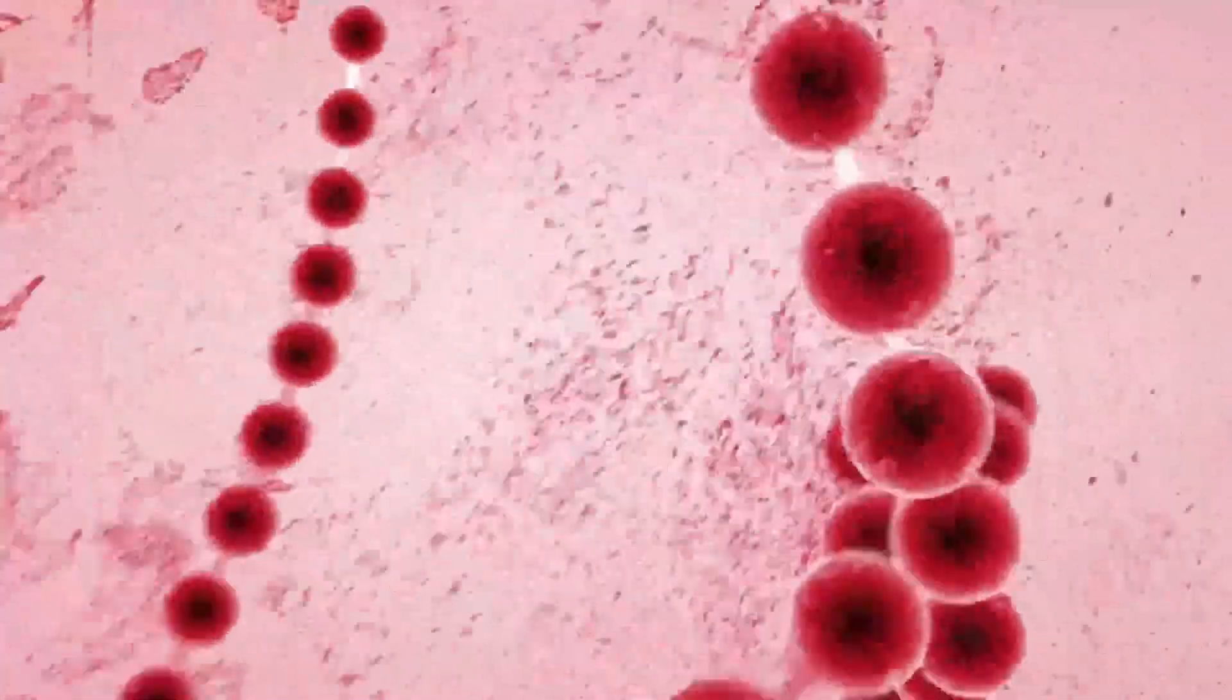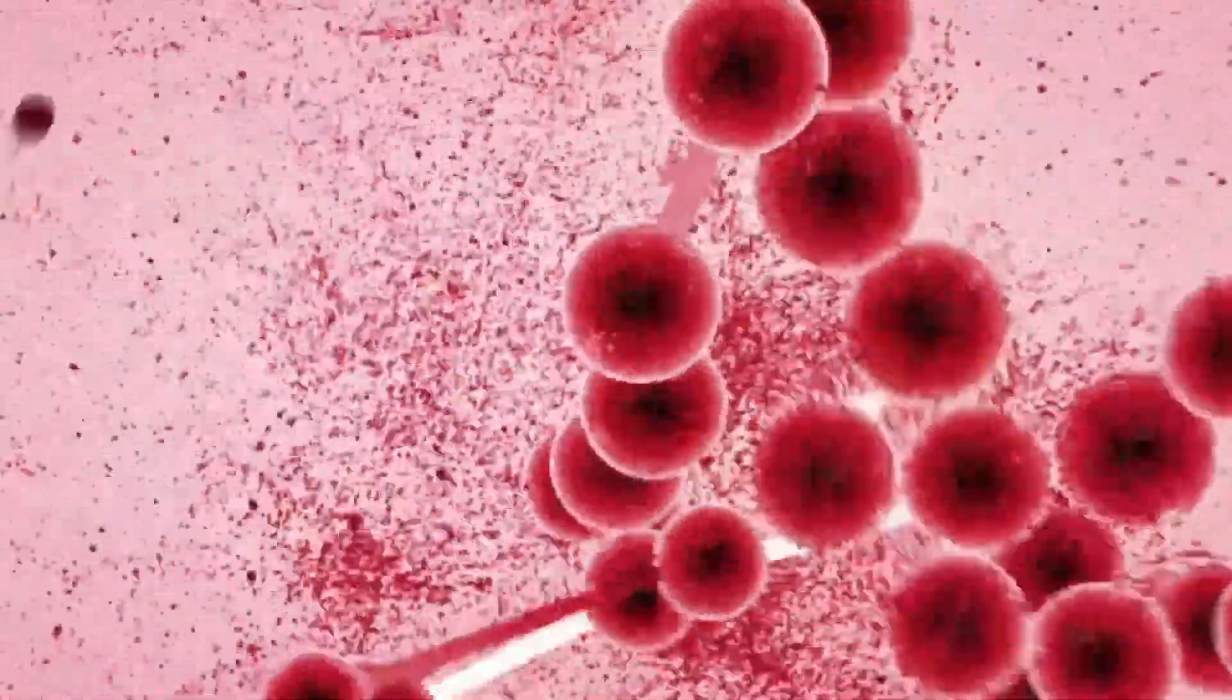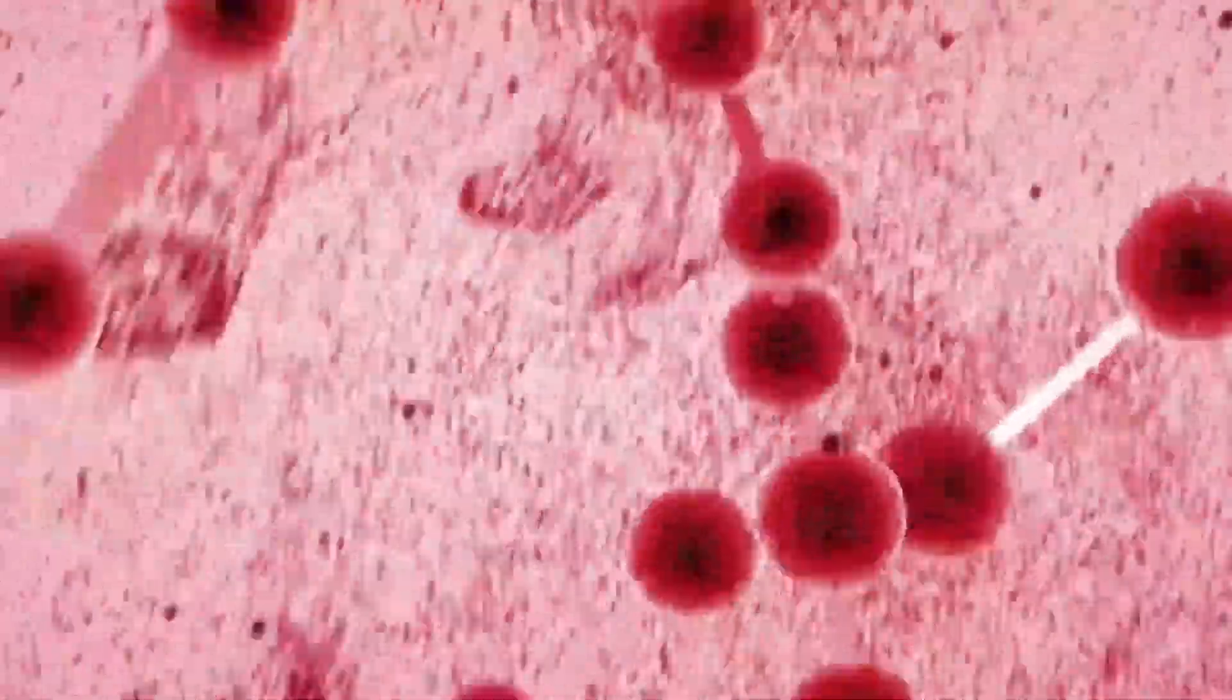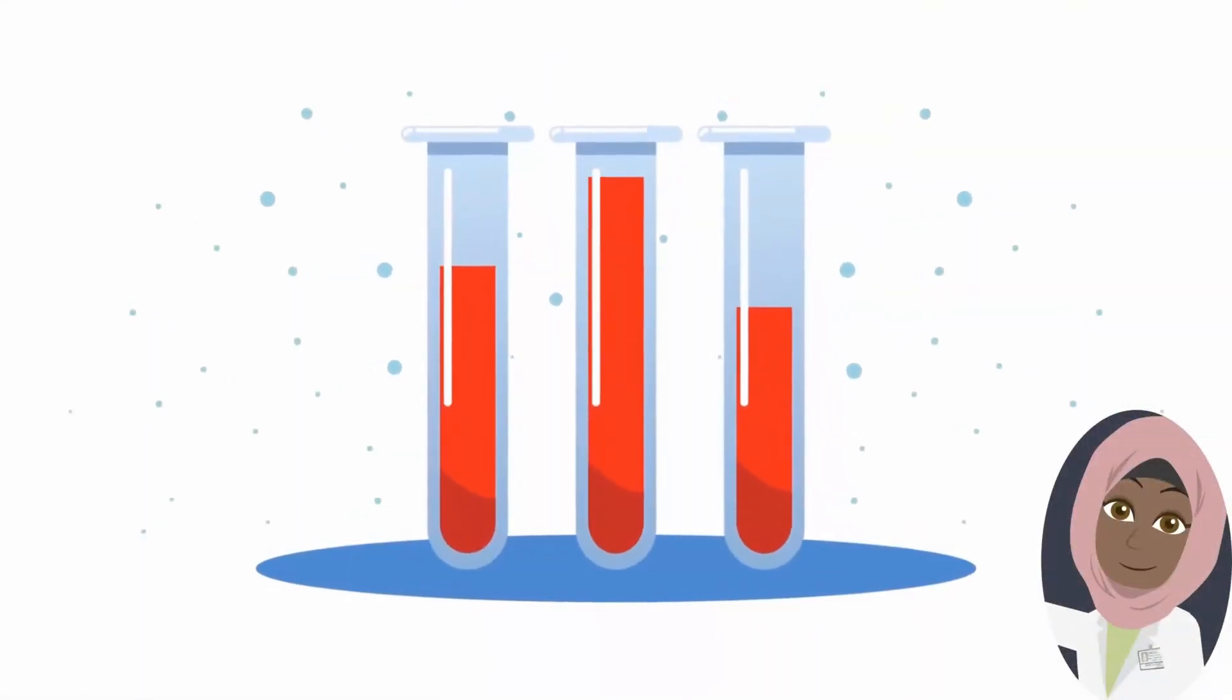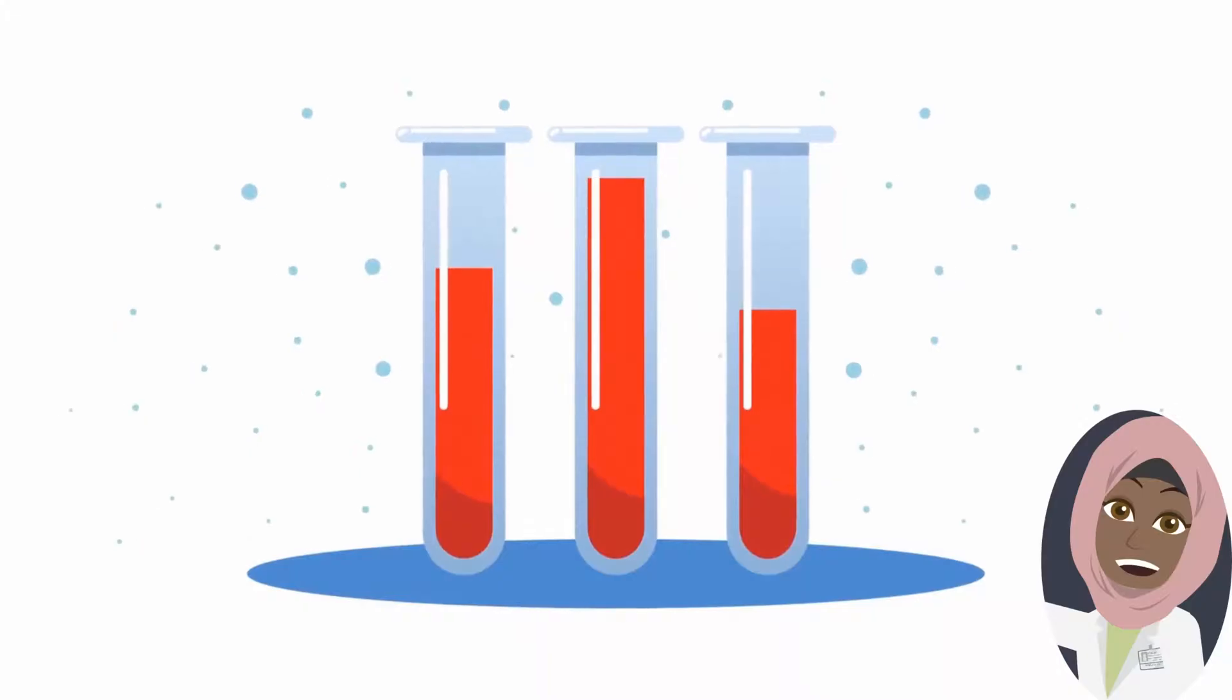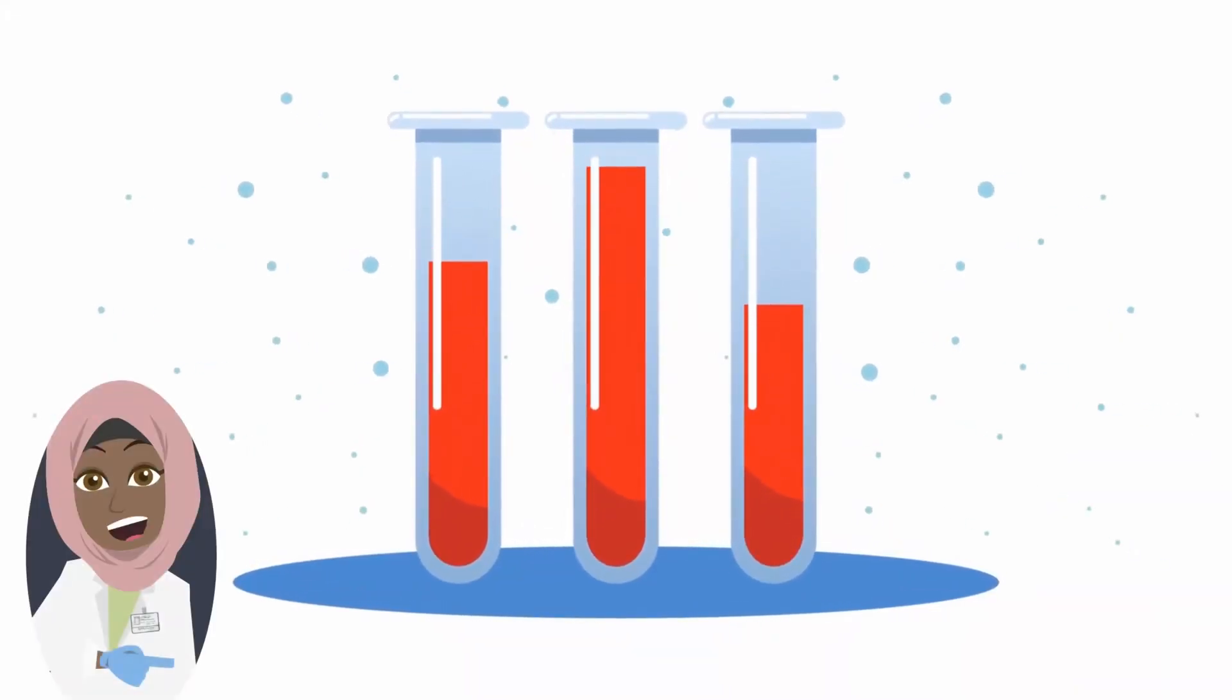These changes occur due to the metabolic activity of the red blood cells without the presence of waste disposal systems, like the kidneys or liver. As a result, the stored red blood cells are exposed to increasing levels of waste products, such as lactate, leading to the alteration of the cells.